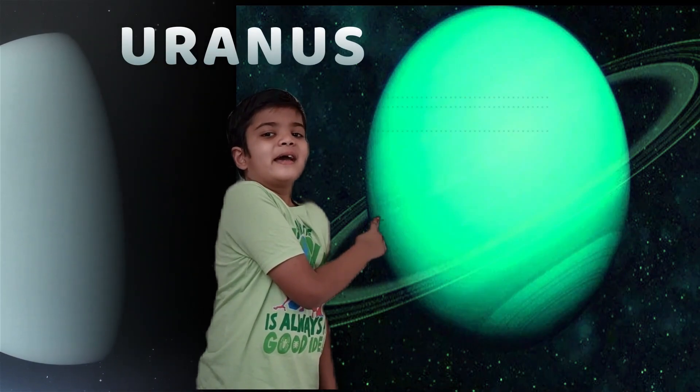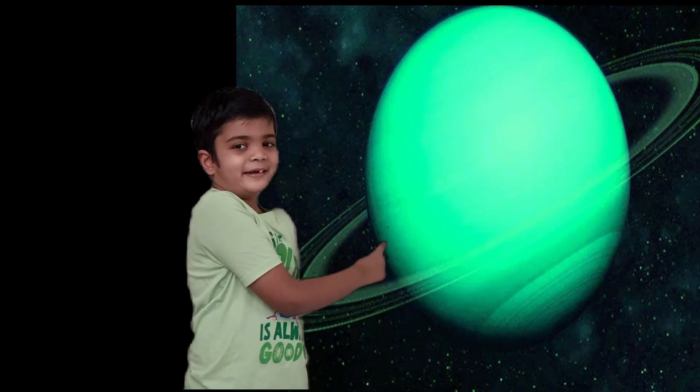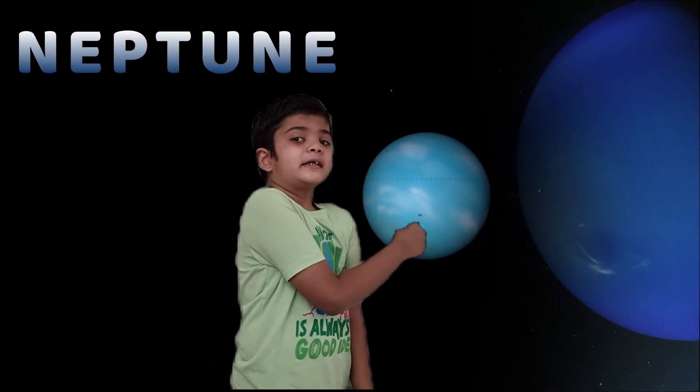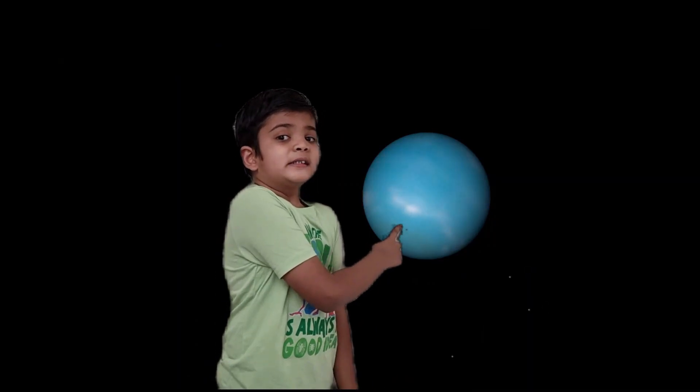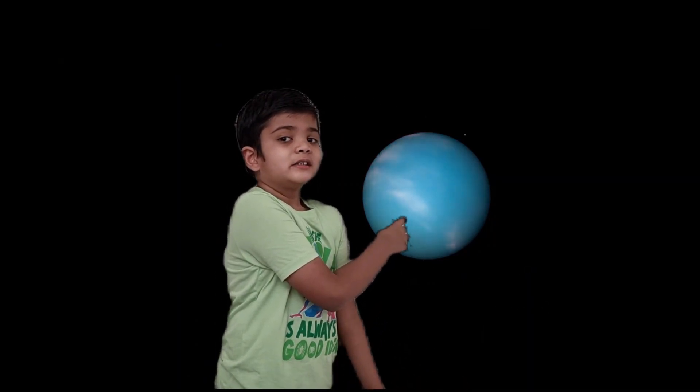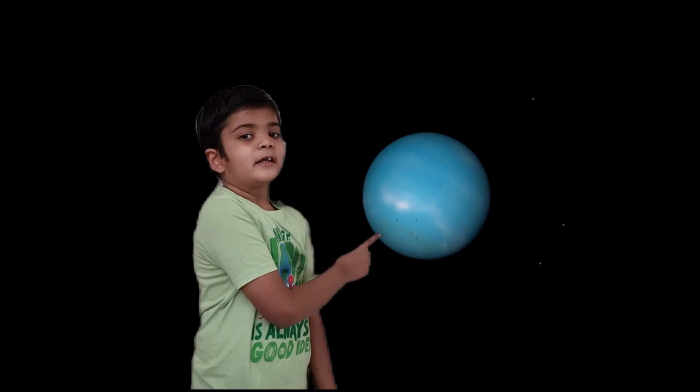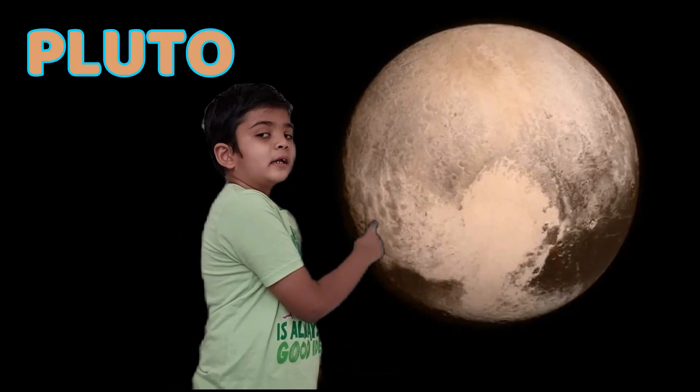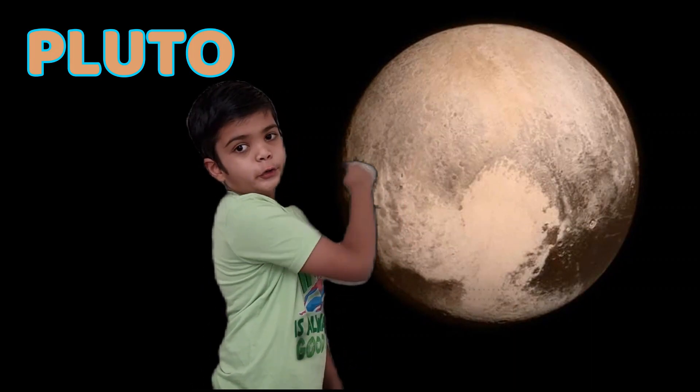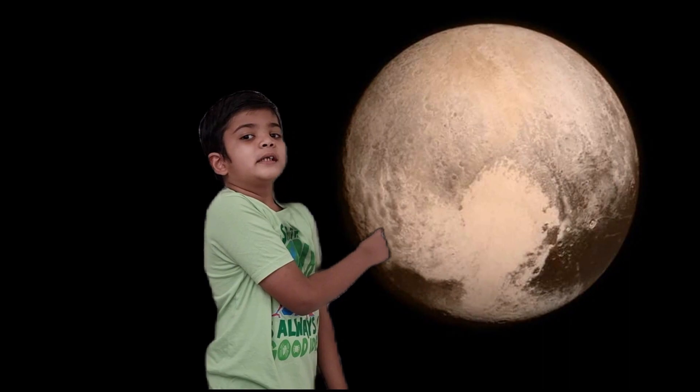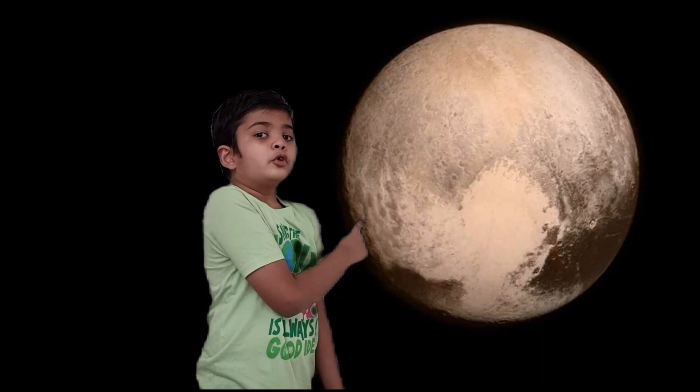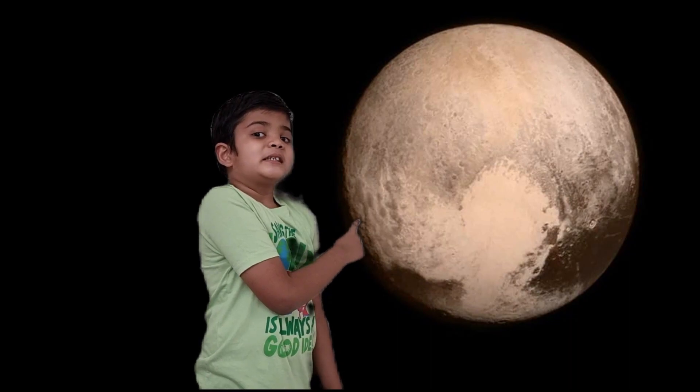Next planet is Uranus. This planet is Uranus. Next planet is Neptune. This is blue in color. Fourth largest planet. Here also it will be cold. And the last planet is Pluto. Since 2006, this is known as dwarf planet.